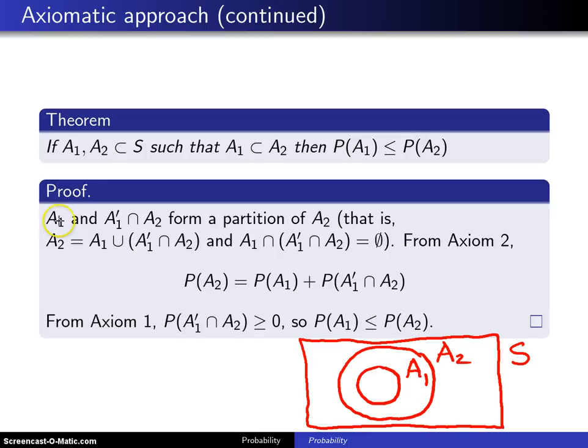So here is the proof. A1, let's shade that in red, and A1 prime intersect A2. You need to think about what that one is. I'm going to go to blue here. That is this area right here. It's a donut shaped region. Those two, the red shaded area and the blue shaded area, form a partition of A2.